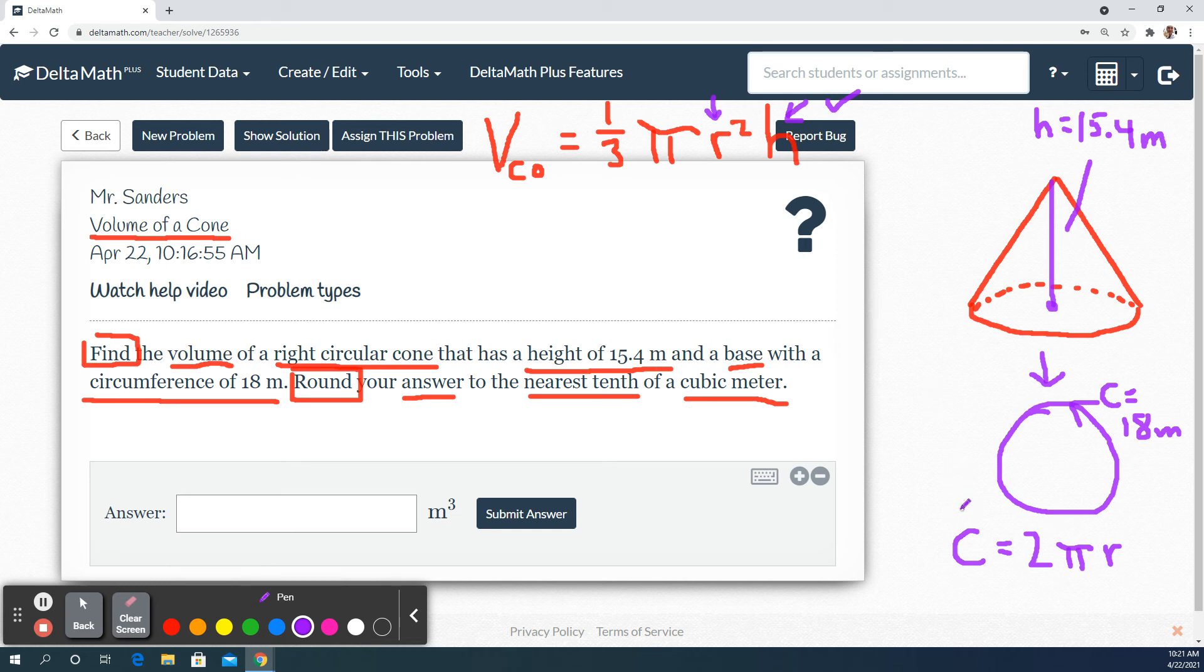then to find r, I'm going to plug that in. So I'm going to have 18 is equal to two pi r. Solving for r, I'm going to go ahead and do it in pieces. Divide by two first.